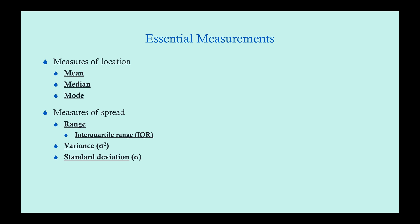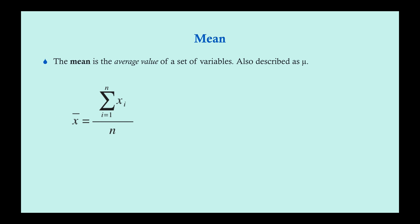The mean is a measure of location. A mean is simply the average value of a set of variables — you have a set of values, you add them up together, and then you divide by the number of values. You may see a mean expressed as an X with a line over it, or as the Greek letter mu. They are slightly different depending on whether you're referring to a sample or a population, but that's beyond the scope here. All you're doing is taking the sum of your variables from the first to the final variable and dividing by the total number of variables.